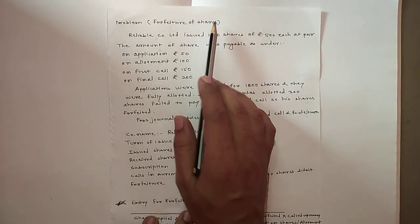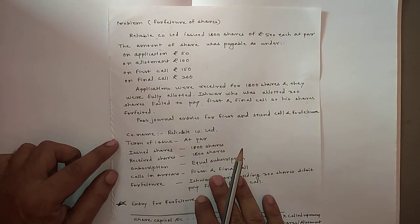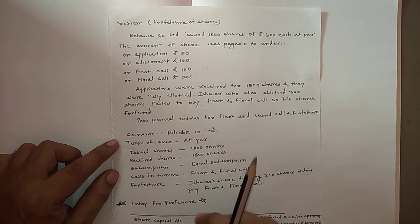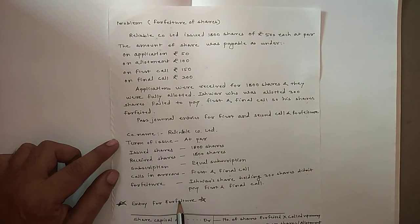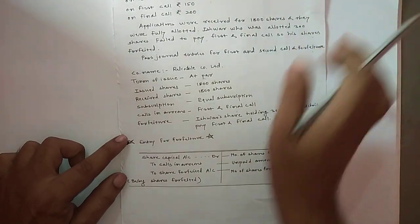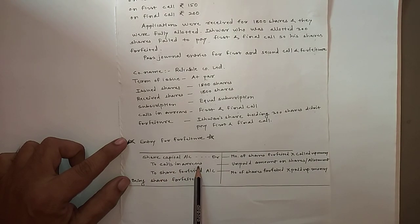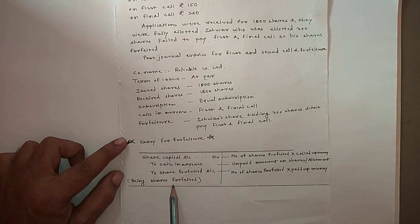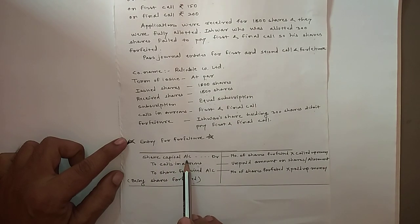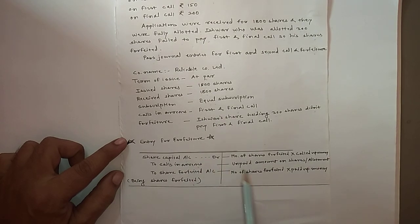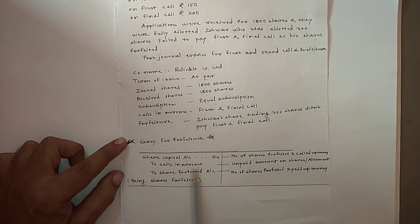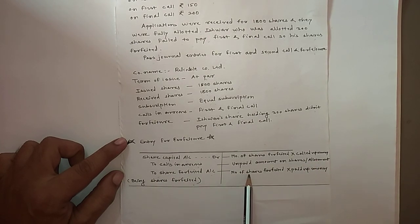This is a problem regarding forfeiture of shares. Students need to pass a new entry regarding forfeiture of shares. The entry is: Share Capital Account debit, to Calls in Arrears, to Share Forfeited Account — being shares forfeited. To calculate the Share Capital amount debited: number of shares forfeited multiplied by called-up money. For the Forfeited Shares account: number of shares forfeited multiplied by paid-up money.